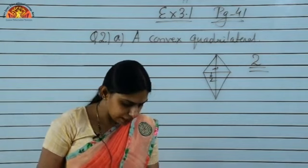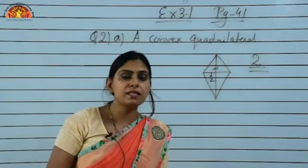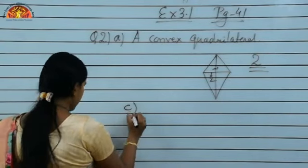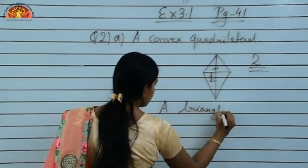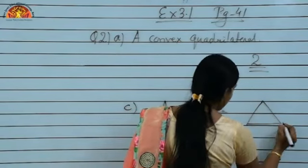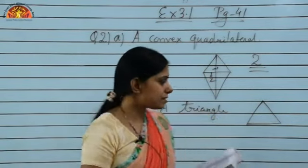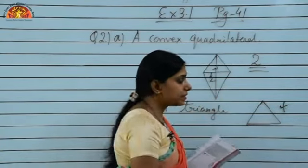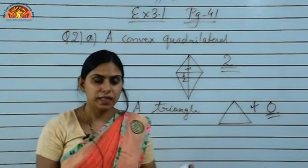For a regular hexagon, when you draw the number of diagonals, it comes out to be 9. For part C, a triangle — the smallest closed polygon made up of 3 line segments — it is not possible to draw any diagonals. So the number of diagonals in a triangle is 0.